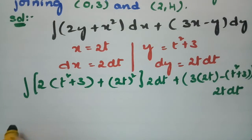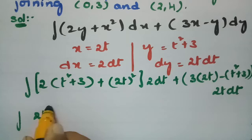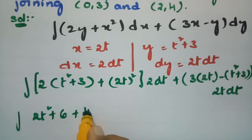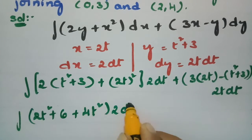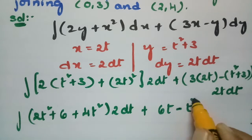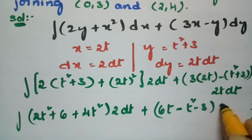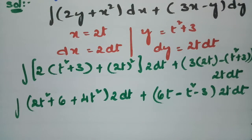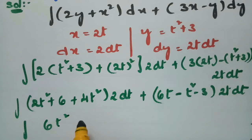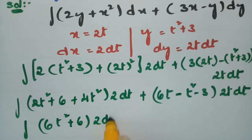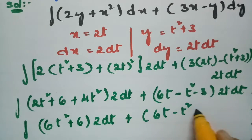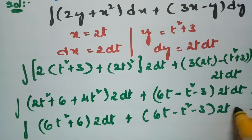Simplifying: the first term gives 2(t² + 3) + 4t², multiplied by 2 dt, which becomes (2t² + 6 + 4t²) · 2 dt = (6t² + 6) · 2 dt. The second term gives (6t - t² - 3) · 2t dt.